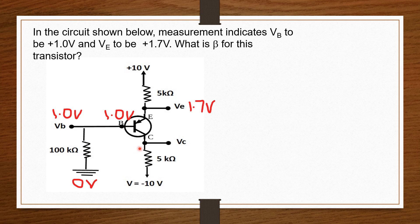Taking a look at our transistor, the arrowhead is moving from the emitter side to the base. Current always moves from the positive side to the negative side, so the emitter side is P, the base is N, and the collector is also P. Our transistor is a PNP transistor.